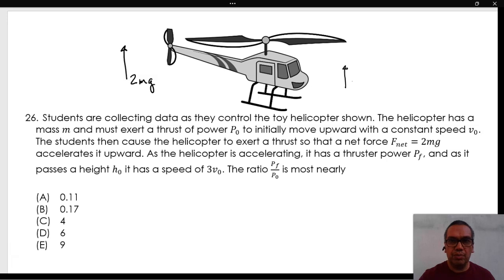The ratio pf over p0 is most nearly. In order to compare the power at height h0 and the initial power, it might be a good idea to first find an expression for the initial power done by the helicopter's motor.